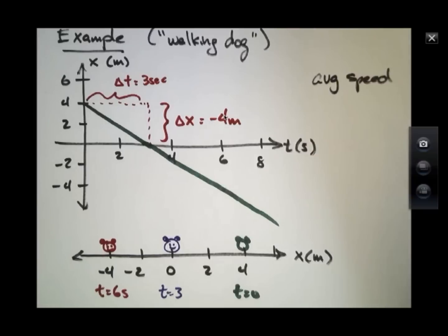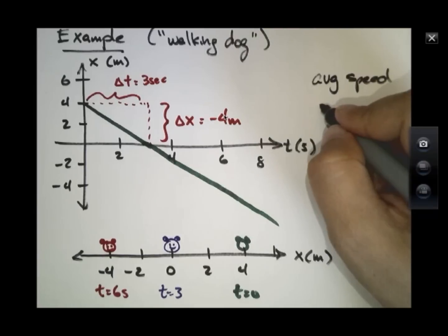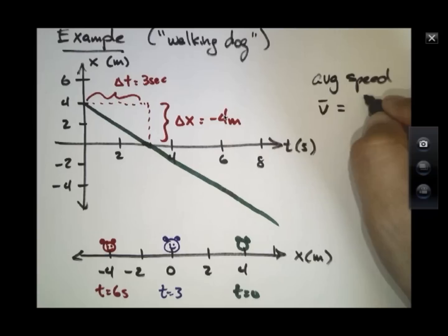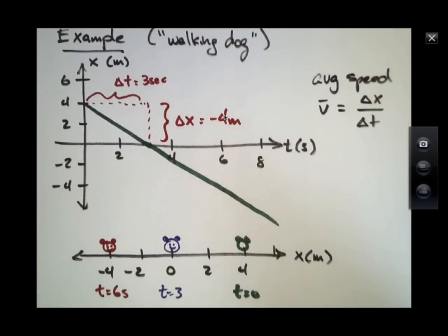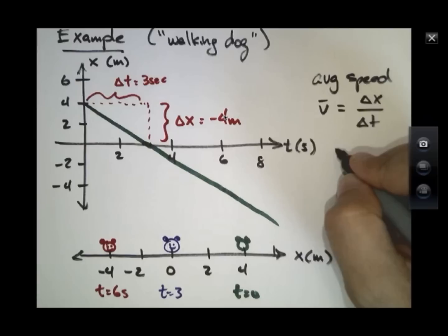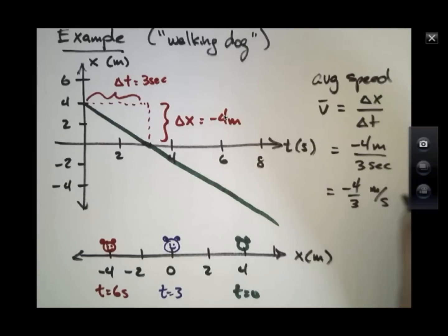So the average speed here, which is delta x over delta t, is minus four meters over three seconds, or minus four thirds meters per second.